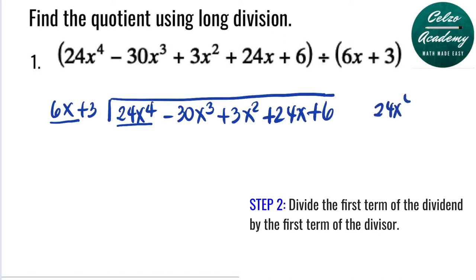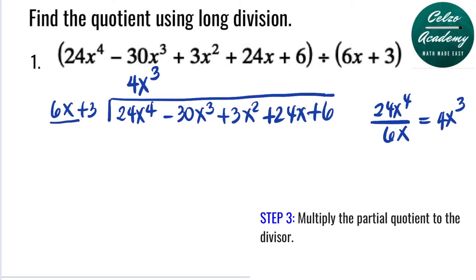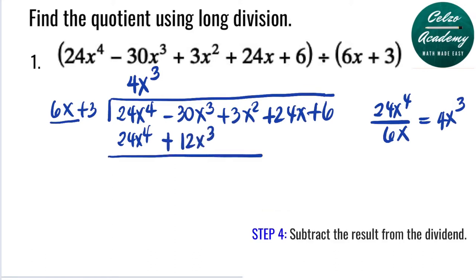We divide the first term of the dividend by the first term of the divisor: 24x to the 4th divided by 6x. 24 divided by 6 is 4, and subtracting the powers gives 4 minus 1, so we have x cubed. The first term of the answer is 4x cubed. We multiply the divisor by 4x cubed: 6x times 4x cubed is 24x to the 4th, and 3 times 4x cubed is 12x cubed. Subtracting: 24x⁴ minus 24x⁴ is 0, and negative 30x cubed minus positive 12x cubed is negative 42x cubed.